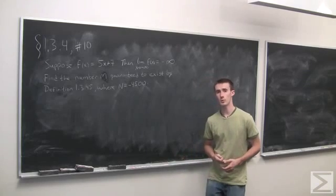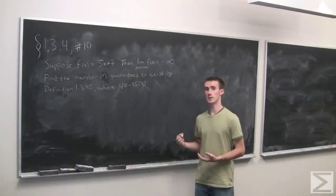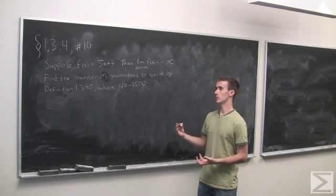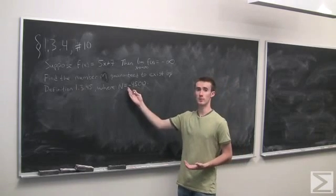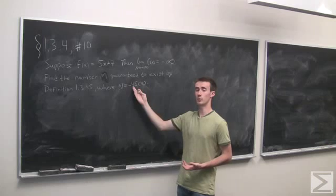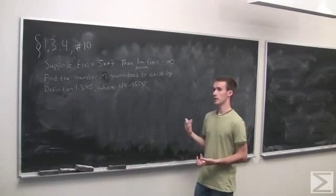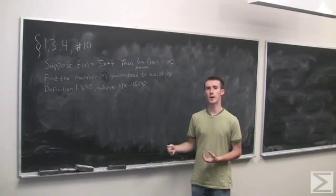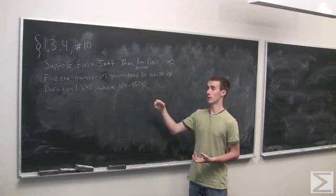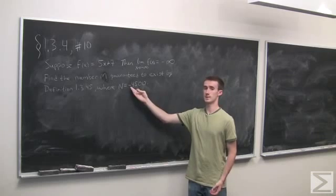Definition 1.3.45, if you recall, guarantees that for any given number n—in this case we have concrete n equals negative 4500—that there exists some m such that if we pick any value greater than m, then our output value will be less than n.